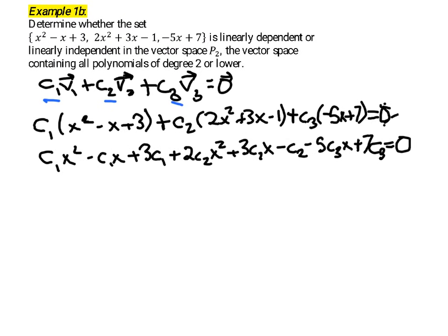What we can do now to solve this is to collect the powers of x. If we focus first on the squared terms, we have c1x squared, 2c2x squared, and those are all the squared terms I see. So we could write that as x squared times c1 plus 2c2.